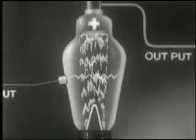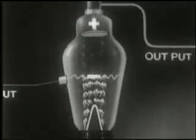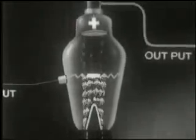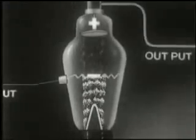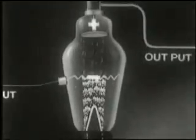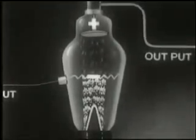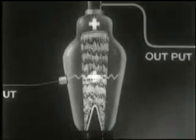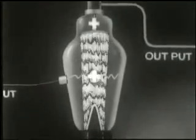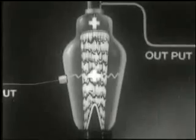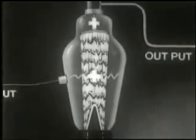Every time a negative potential is impressed on the grid, even though it may be very minute, it has a large effect in reducing the number of the negatively charged electrons which would otherwise keep flying from cathode to anode. Conversely, when the grid is positive, an equally large effect is exerted in increasing the flow of electrons from cathode to anode.